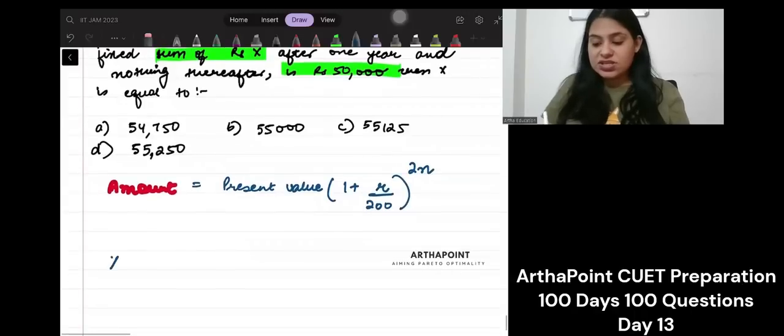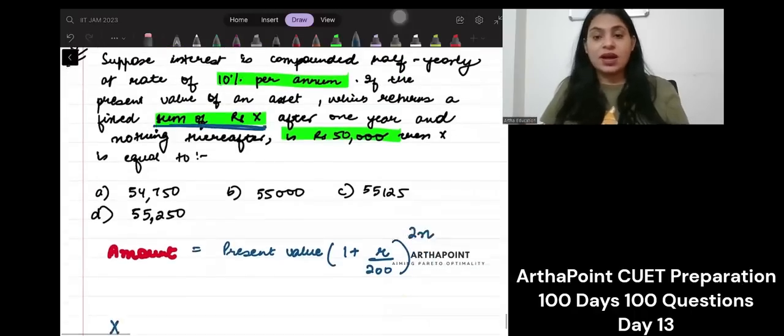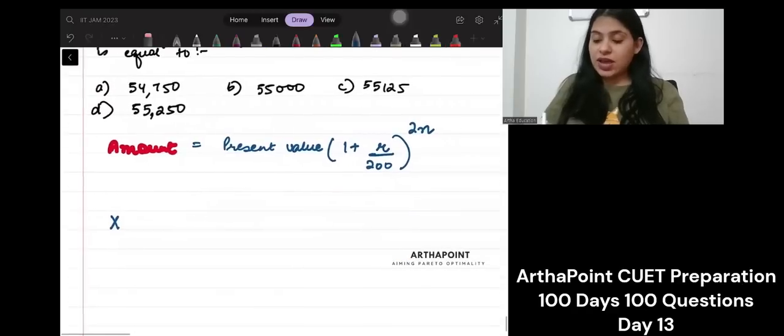So, amount is X. You are given a fixed sum of X. After kitna year? One year. So, N will be 1.